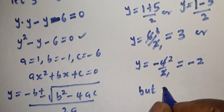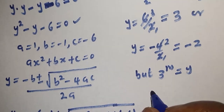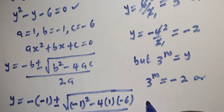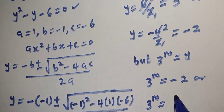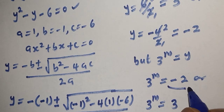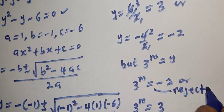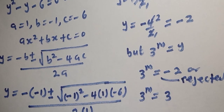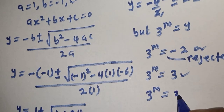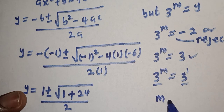Since 3 raised to power m equals y, we have 3 raised to power m equals 3, or 3 raised to power m equals minus 2. Since the exponential is always positive, the solution y equals minus 2 is rejected. The only valid solution is 3 raised to power m equals 3, which equals 3 raised to power 1. Since we have the same base, therefore m is equal to 1.